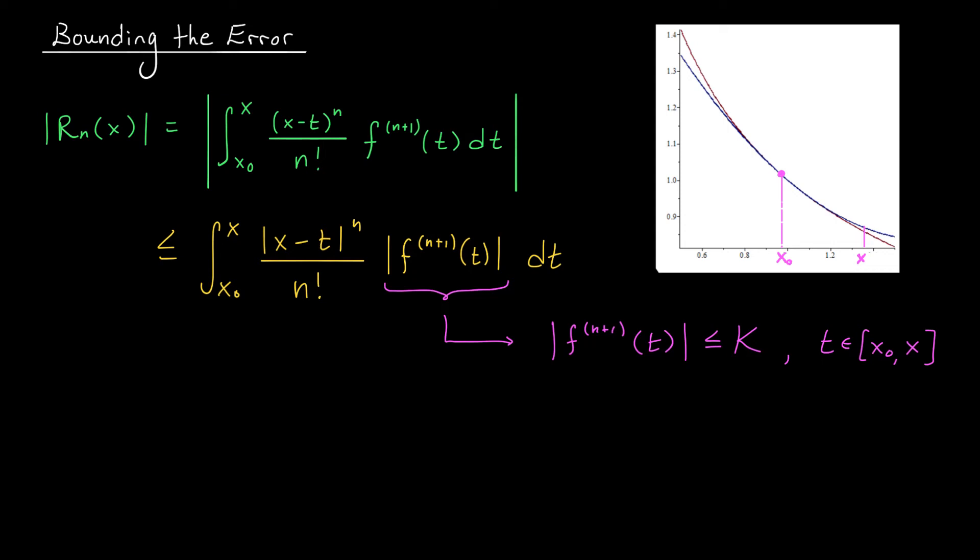The next term that we're going to have to worry about is this absolute value of (x minus t) to the n. Notice that if x, the point where we're making the approximation, occurs to the right of x0, then x minus t is going to be positive for all values of t in this range, and we can remove this absolute value. If instead, x occurs on the left of x0, then x minus t will be negative, and the absolute value will multiply this expression by minus 1.